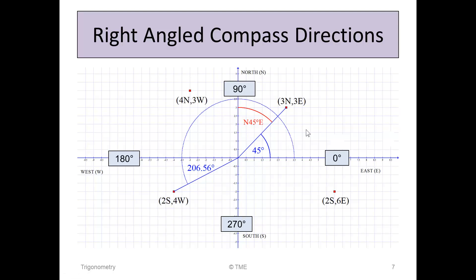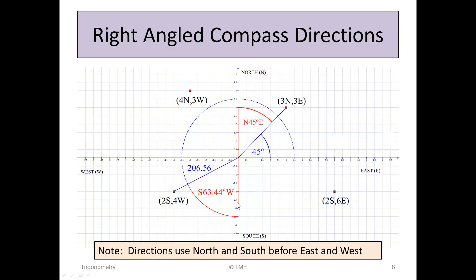So let's look at another example. Here's an example of an angle all the way down in the third quadrant, starting at 0. It's the angle 206.56. Because it's between 180 and 270, it's in the third quadrant. But how do we get there? Well, from a navigation point of view, the first direction would be to go south, because it's below the east-west axis. So we go south, and then turn towards the west. The first direction is south, then we go 63 degrees to the west, to give back the angle 206.56.